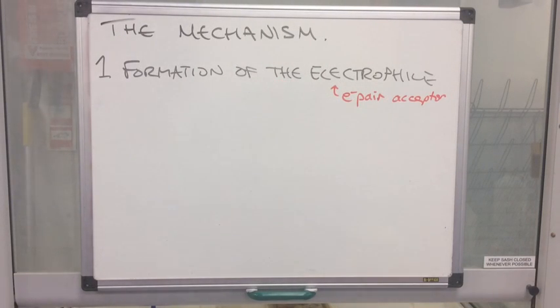The mechanism is effectively split into three parts. So part one, and this is often a part that students forget because there's no curly arrows in it I guess. So part one is the formation of the electrophile. And I've just written in red there, just the definition. An electrophile is an electron pair acceptor.